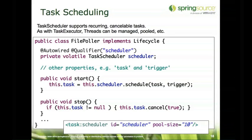This also simplifies how things work. The task is now an encapsulated unit of work — it just polls the file system once and returns the results, executed repeatedly through the scheduler. Stopping the task is easier too: rather than managing a flag to end a while loop, you just call cancel on the ScheduledFuture object returned by the scheduler. The task scheduler is configured using the task namespace with a pool size attribute for the number of threads it maintains.